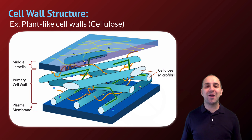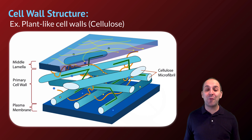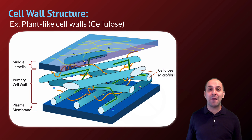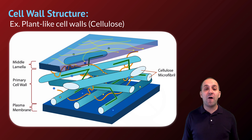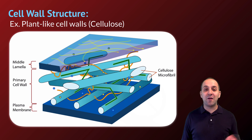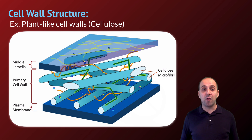The particular components of cell walls vary among plants, fungi, and bacteria. But in each case, they're made out of different types of polysaccharides. And of course, in plant-like cells, they're made out of fibers of cellulose.